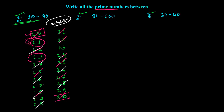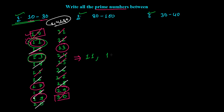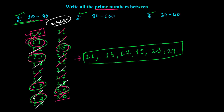After 13, leaving 17 — 17 is a prime number. Cancel all multiples of 17; there are no more in this range. Now see what numbers are left: till 17 or 23 you can check. Whatever numbers remain are our prime numbers. So the prime numbers between 10 to 30 are: 11, 13, 17, 19, 23, and 29.